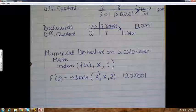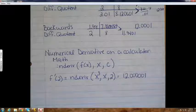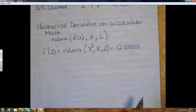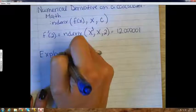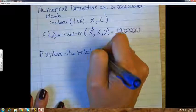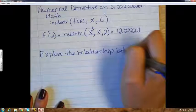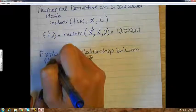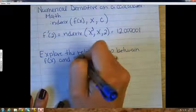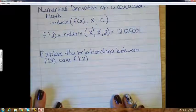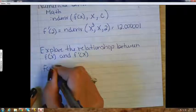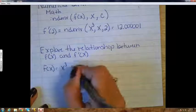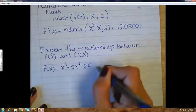Now that we know we can check a numerical derivative on the calculator, we want to look at the relationship between functions and their derivative. This is our explore section — exploring the relationship between a function and the derivative function. So let's look at f of x equals x cubed minus five x squared minus eight x plus seventy.